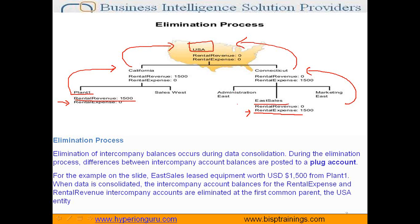So in HFM the elimination process happens automatically. In this process, one more account is used called the plug account, which stores the offset values. It is possible that Plant One and eSales do not agree upon the common numbers and there are some discrepancies. This discrepancy is handled by your plug account.